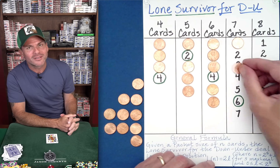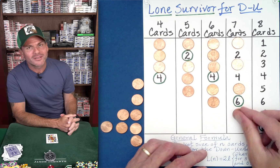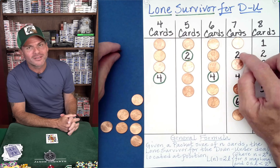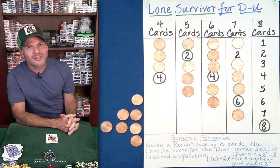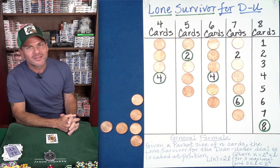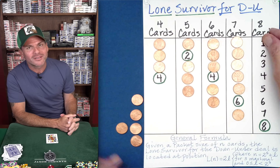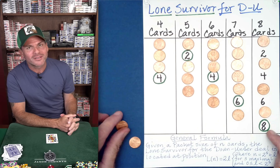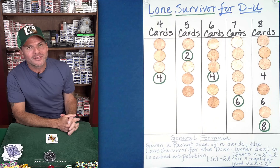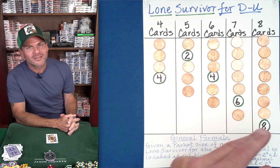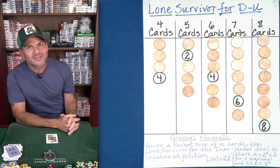For a packet of seven cards, it's one, three, five, seven eliminated — then just look at cards two, four, six as their own packet. Since the last one was eliminated, two survives, and the card after that is four, which is eliminated. Six survives, but the one after the surviving card is two, so it gets eliminated. For eight cards: one, three, five, seven are all gone. Eight survives, two gets eliminated, four survives, six gets eliminated, eight survives, and then four gets eliminated. So the lone survivors are: four, two, four, six, eight for packets of four through eight cards respectively.